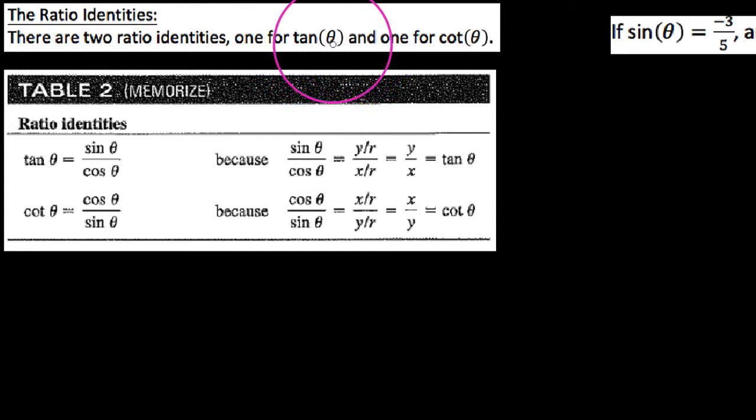I want to start by pointing out that there are two of them. There's one for tangent of an angle theta and one for the cotangent of the angle theta. Also notice that tangent and cotangent are reciprocals of one another, but we'll just start by looking at this table, and you'll notice the table says memorize.